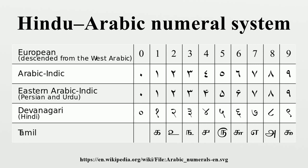These Indian developments were taken up in Islamic mathematics in the 8th century, as recorded in Al-Qifti's Chronology of the Scholars. The numeral system became known to the Persian-Muslim mathematician Khwarizmi, who wrote a book on calculation with Hindu numerals around 825, and to the Arab mathematician Al-Kindi, who wrote four volumes on the use of Hindu numerals around 830. Kushyar ibn Labban, who wrote Kitab fi Usul Hisab al-Hind, produced one of the oldest surviving manuscripts using the Hindu numerals. These books are principally responsible for the diffusion of the Hindu system of numeration throughout the Islamic world and ultimately to Europe.